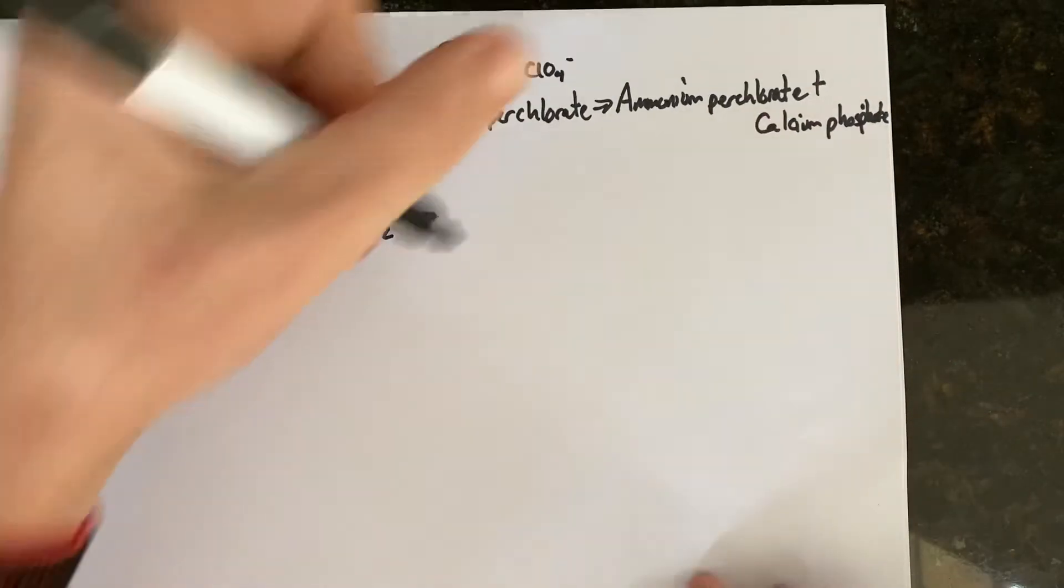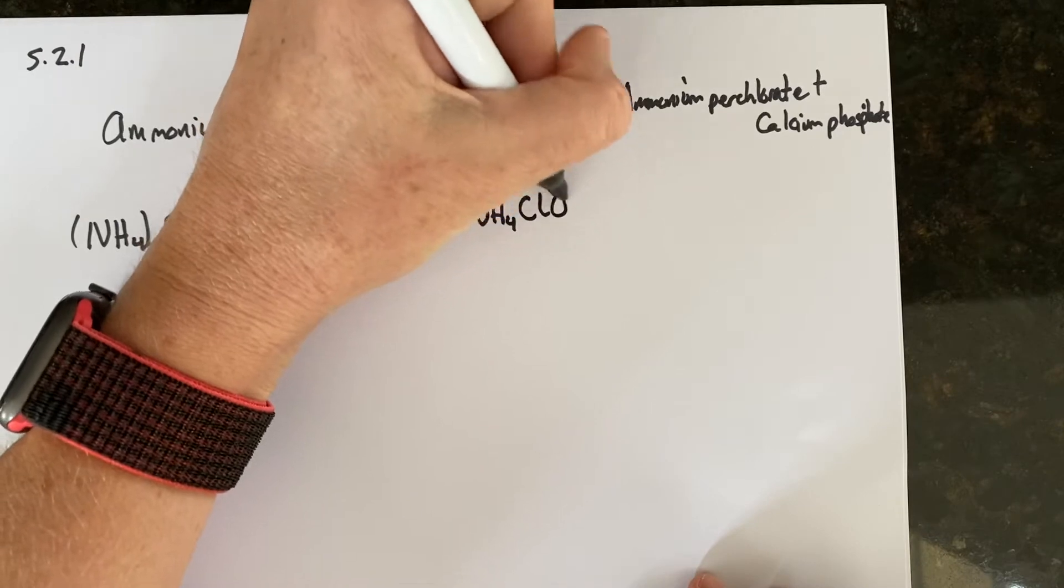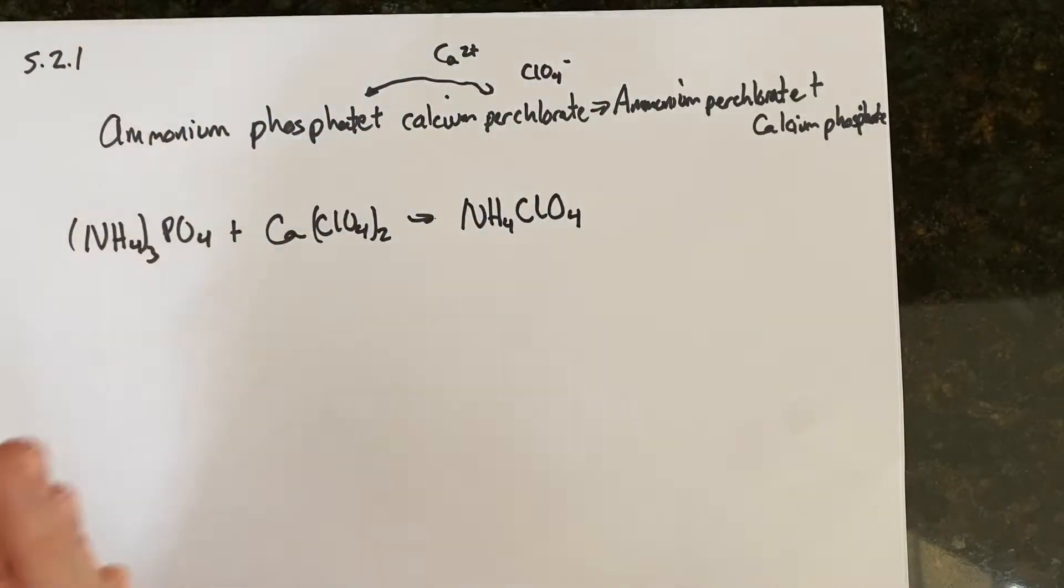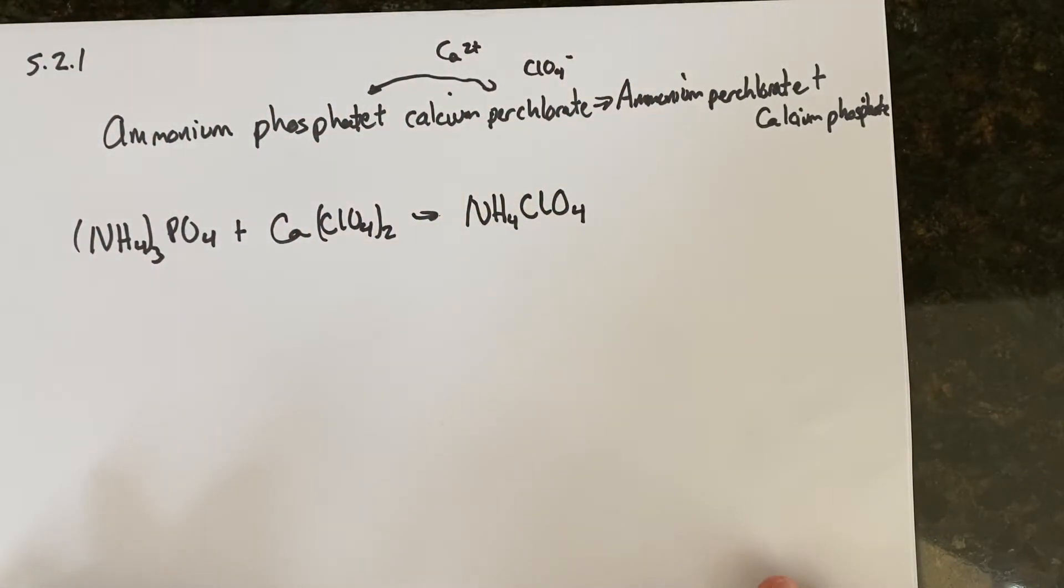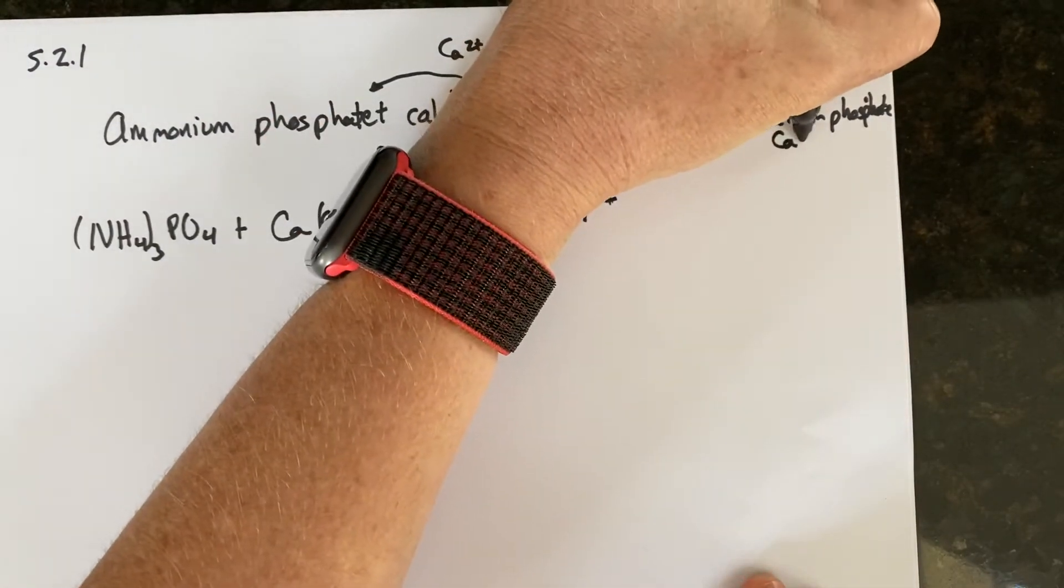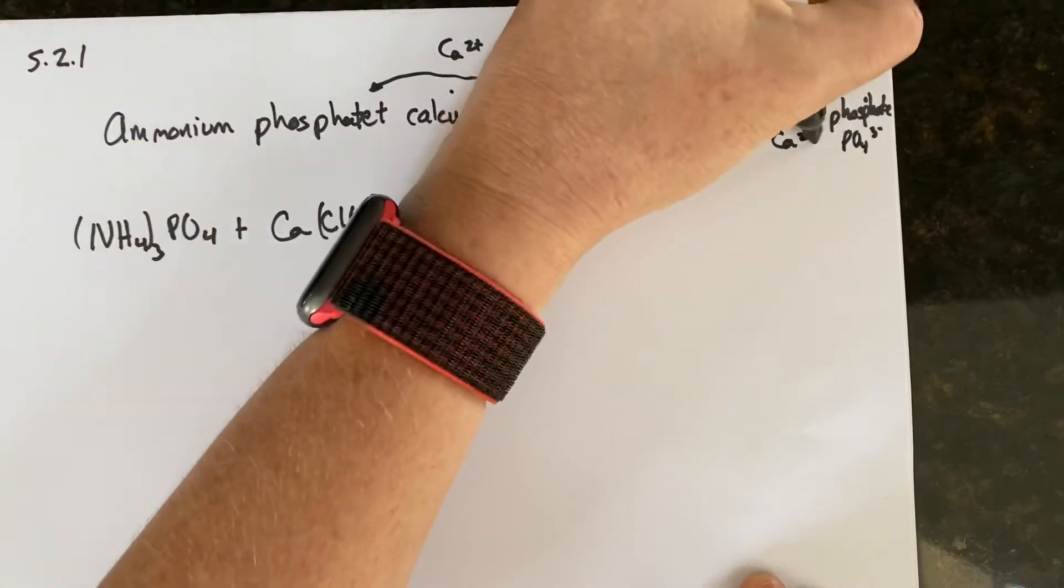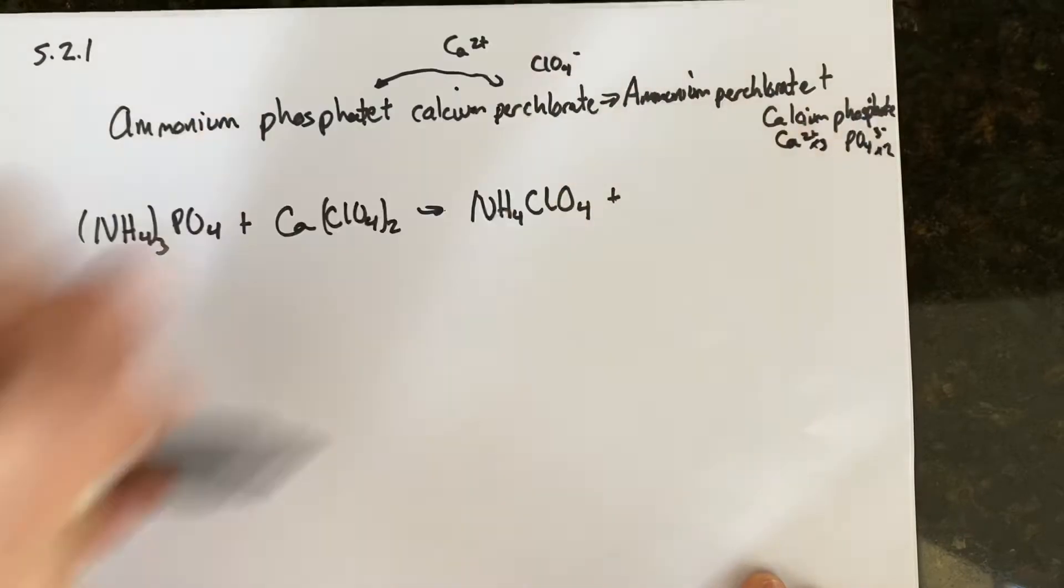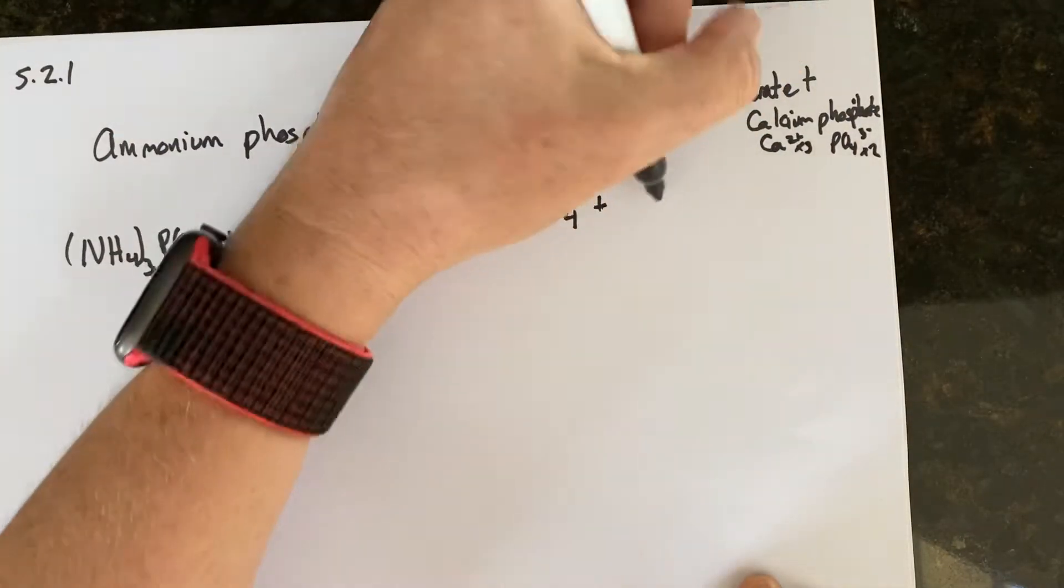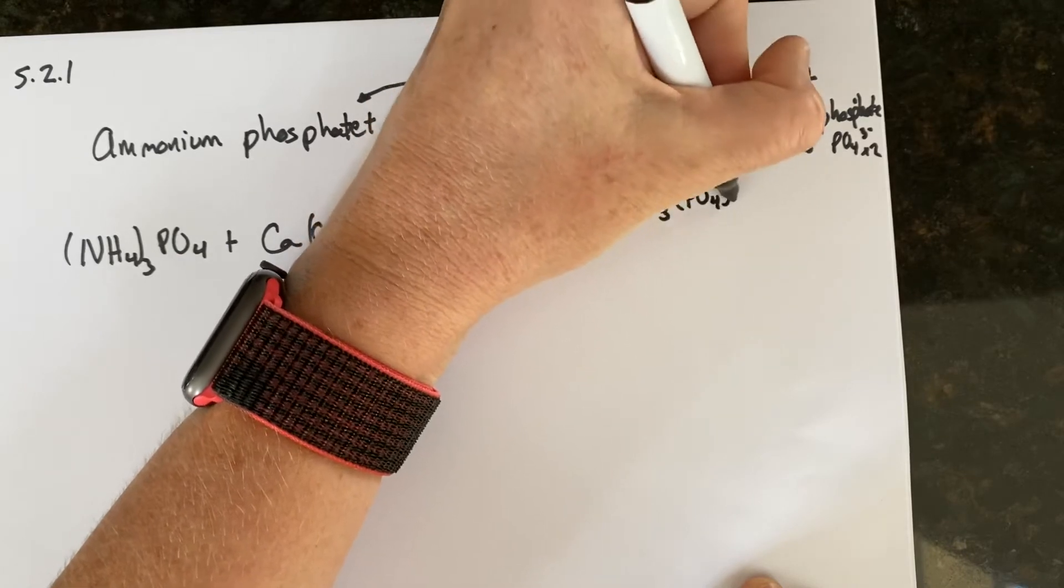Ammonium perchlorate will be NH4-ClO4. And this is why naming is really important. You want to be able to do this very quickly. And calcium phosphate. Calcium is Ca2+, phosphate's PO4 with a three negative charge. So you need three calciums and two phosphates. So we get Ca3PO4-2.